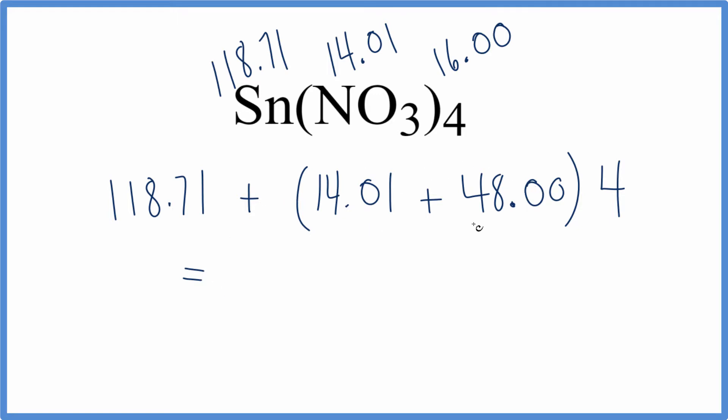So we're going to take these two numbers, add them together, multiply by 4, and then add to the 118.71. And when we do that, we get a molar mass of 366.75 grams per mole.